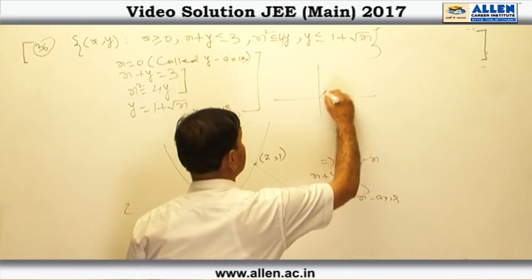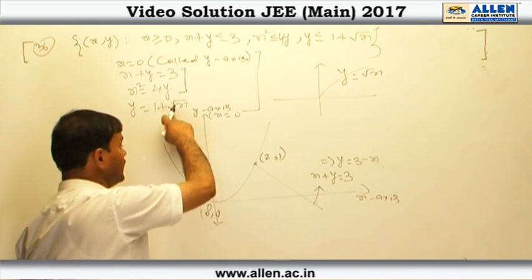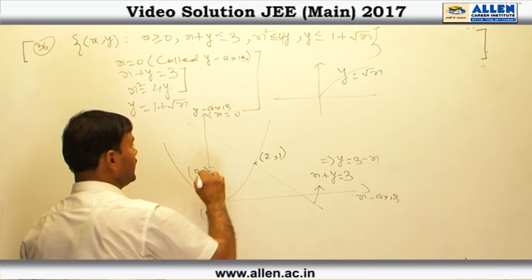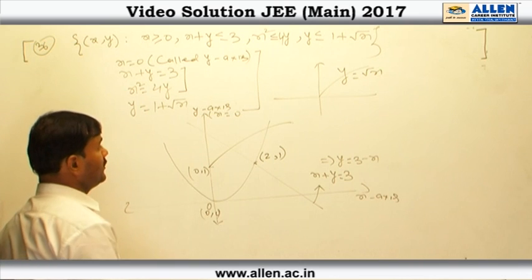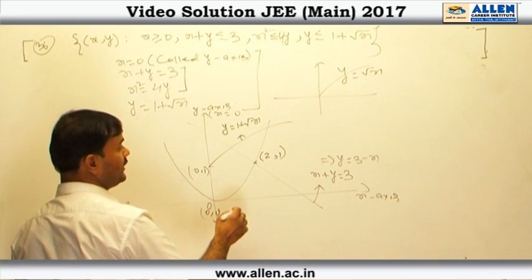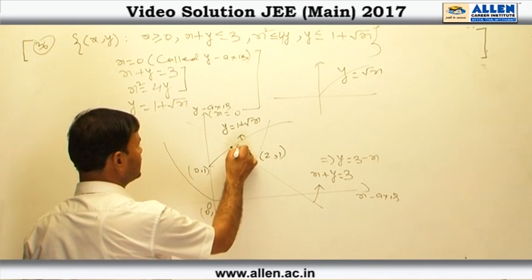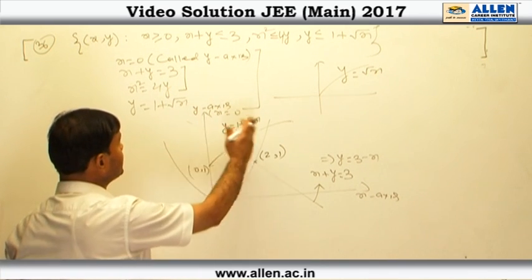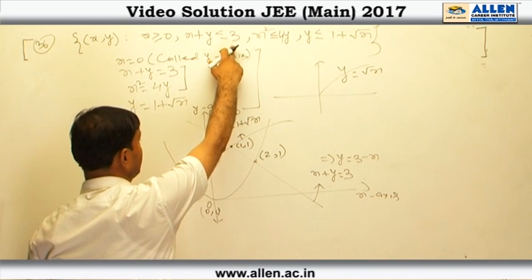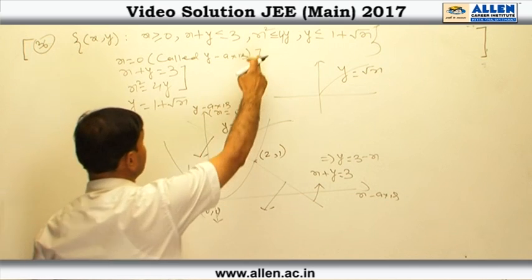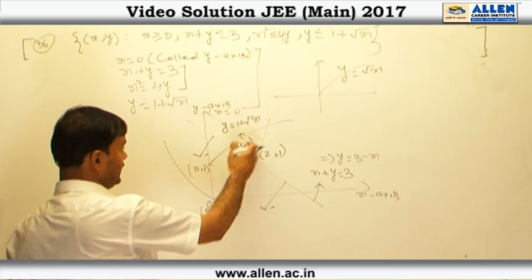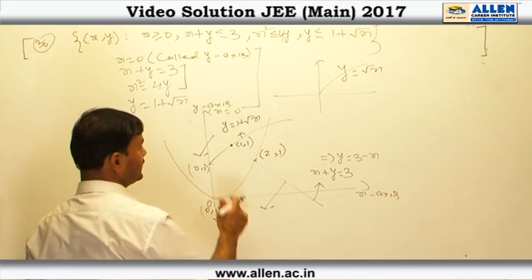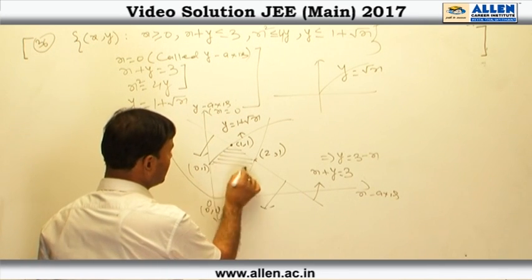There is one more curve y equal 1 plus root x. This is the curve y equal root x lifted by 1 unit, so it passes through (0, 1) and goes upward. When we solve y equal 1 plus root x with the line x plus y equal 3, we get their point of intersection at (1, 1). The required region is x non-negative (right side of y-axis), x plus y less than or equal to 3 (containing origin), points inside the parabola, and y less than or equal to 1 plus root x.